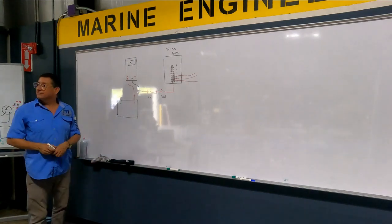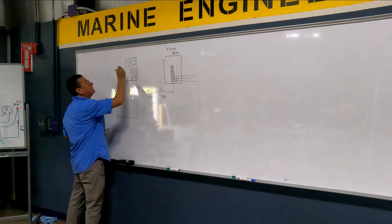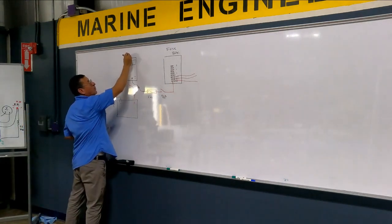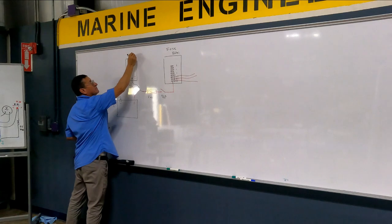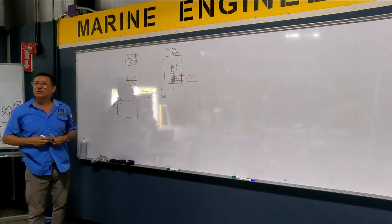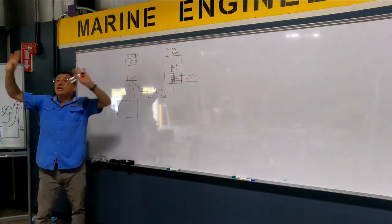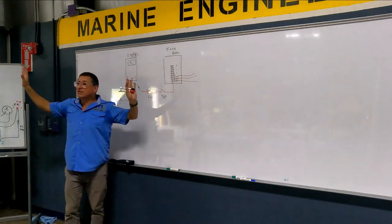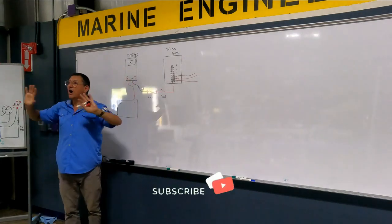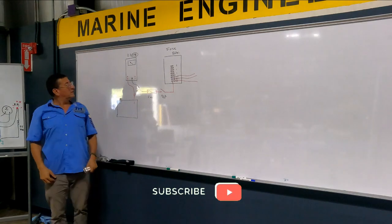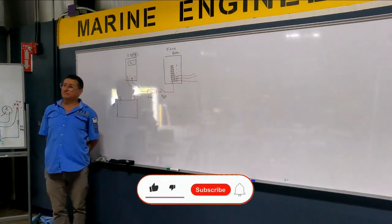And now the reading, the reading is, for example, 2.3 amps. With everything off. 2.3 amps, everything is off in this moment in the car. But I have 2.3 amps flowing over there.